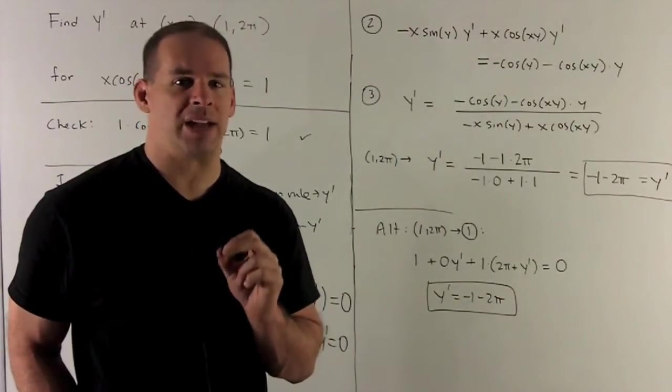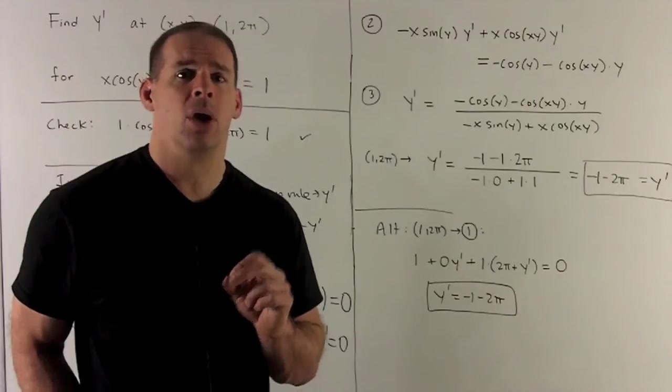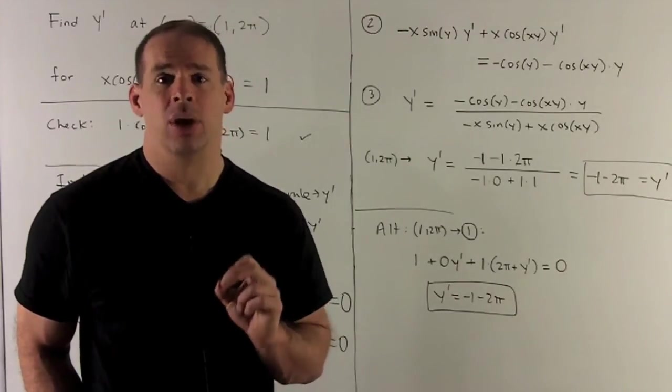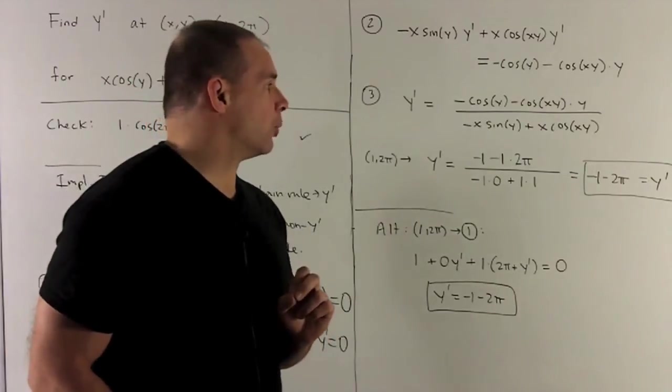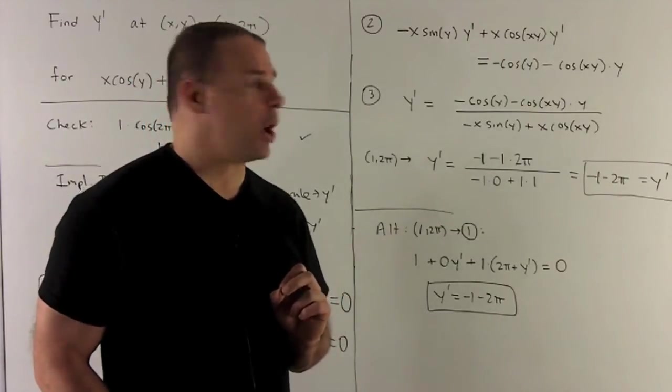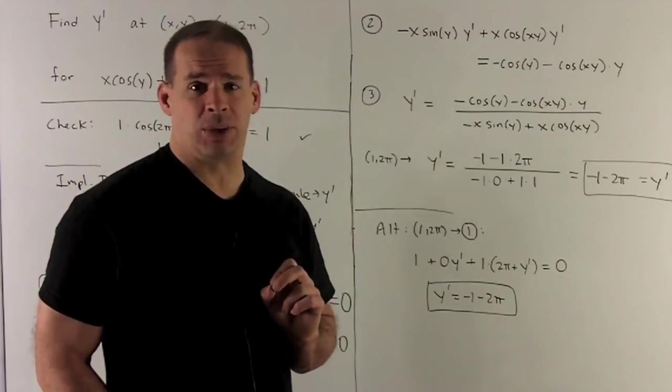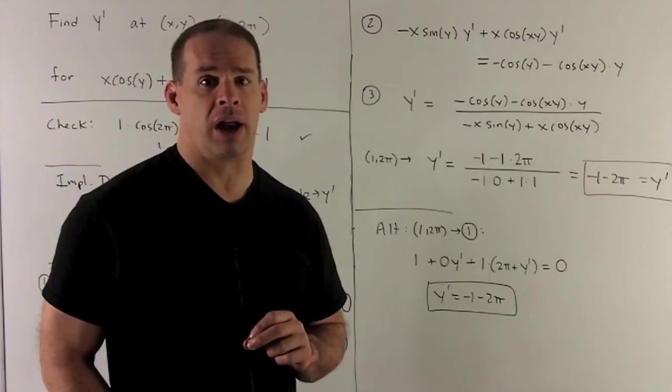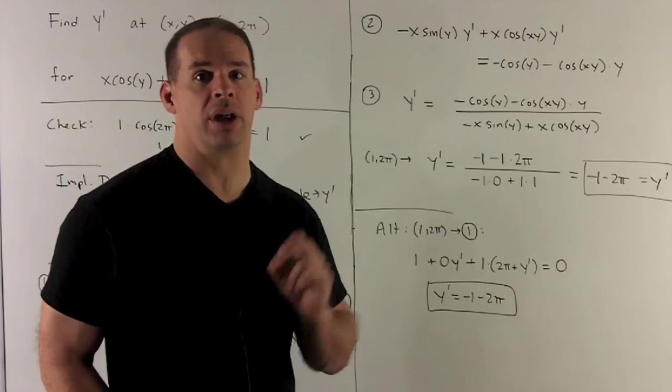Okay, we can't stop there because we're asked to find it at a specific point, (1, 2π). So we'll stick that in for x and y, and then the number's going to come out. So note, when I do that, what happens? Okay, remembering that cos(2π) is 1, sin(2π) is equal to 0, we're going to be left with a -1 - 2π for our answer of y prime. And then we're done.